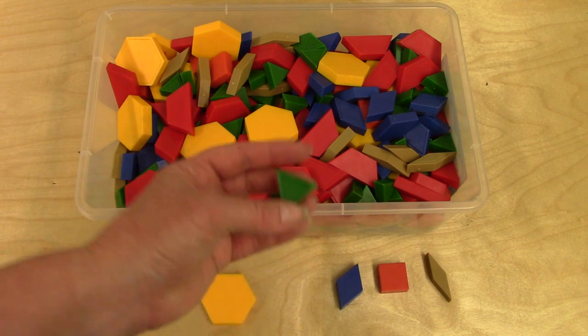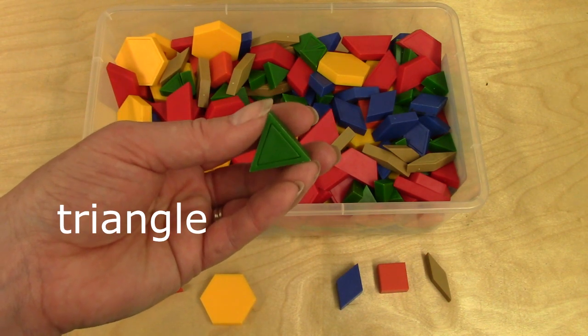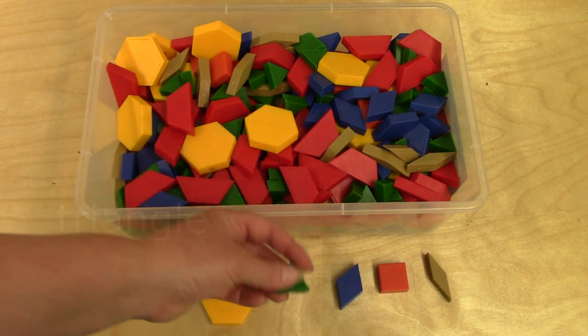What about this little green one? Yes, it is a triangle. It has three sides and three angles.